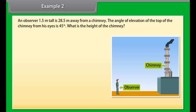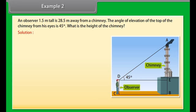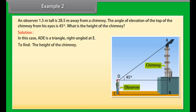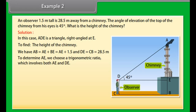Example 2: The angle of elevation of the top of the chimney from the observer's eyes is 45°. Here AB is the chimney, CD is the observer, and angle ADE is the angle of elevation. Triangle ADE is right-angled at E, and we are required to find the height of the chimney. We have AB = AE + BE = AE + 1.5, and DE = CB = 28.5 meters. To determine AE, we choose the tangent of the angle of elevation, which involves both AE and DE.